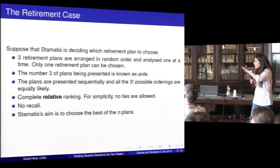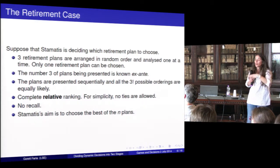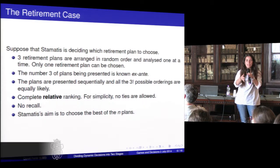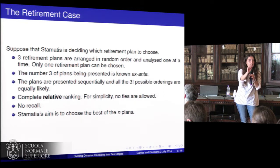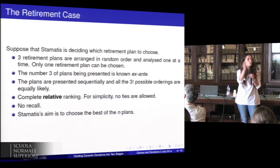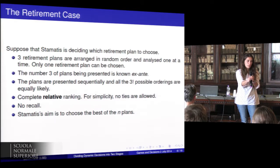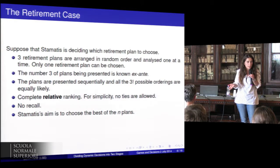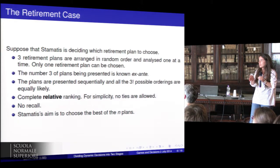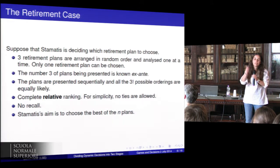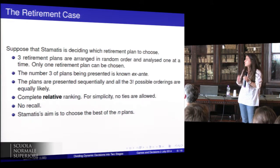And finally, there's no recall — a plan is offered and Stamatis has to say yes or no. If he says no, he moves on to the second stage and cannot go back. If he says yes, he's stuck with that plan. So it's irreversible: once he says no he cannot go back, and if he says yes he's stuck with the plan.